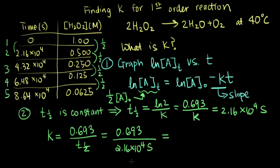And if we plug this into our calculator, we get that K is equal to 3.21 times 10 to the minus 5, and our units are 1 over seconds.